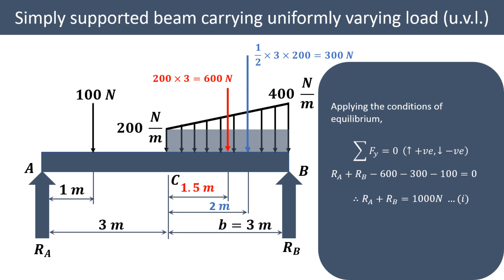Applying the conditions of equilibrium: summation of forces in the Y direction is equal to zero. Upward forces are positive, so RA and RB are positive. The 600 Newton load is negative — acting downward. The 300 Newton load is also negative, and the 100 Newton force is also acting downward, so it is negative too. Therefore RA plus RB equals 1000 Newton.